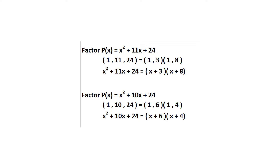Here we have two polynomials: x² + 11x + 24 and x² + 10x + 24. In both, we ask what two integers multiply to get 24. For the first, they must add to 11: that's 3 and 8, since 3×8=24 and 3+8=11, giving (x+3)(x+8). For the second, they must add to 10: that's 6 and 4, since 6×4=24 and 6+4=10, giving (x+6)(x+4).